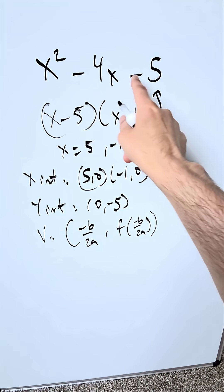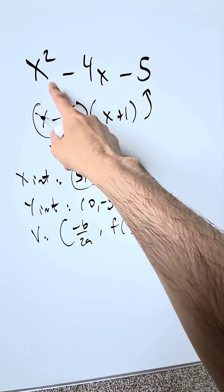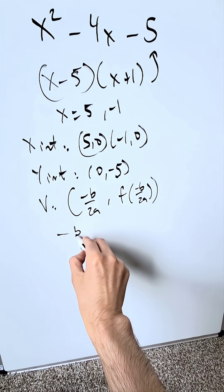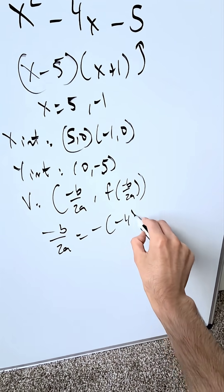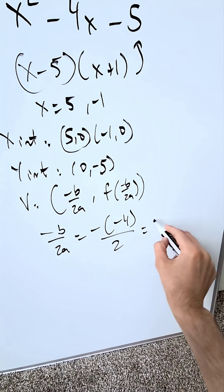My a value is 1, b is minus 4, c is minus 5. We don't need that. We just need a and b. Minus b over 2a over here is going to be minus minus 4 divided by 2 which is 2.